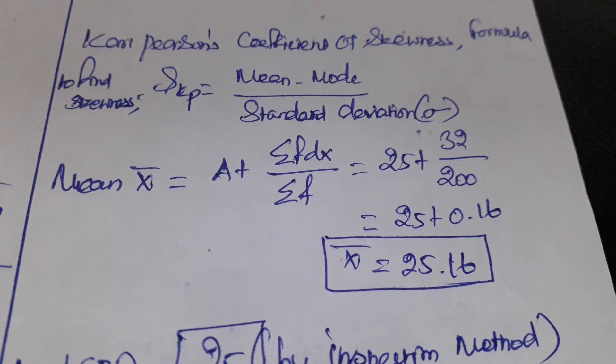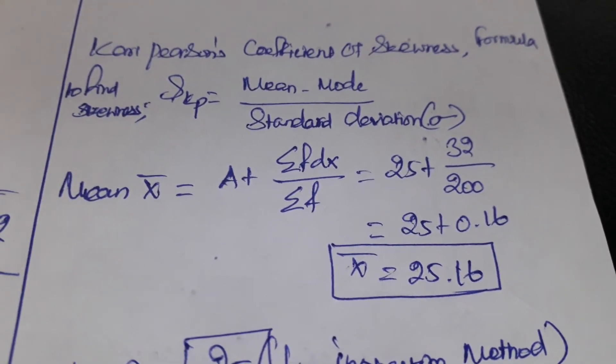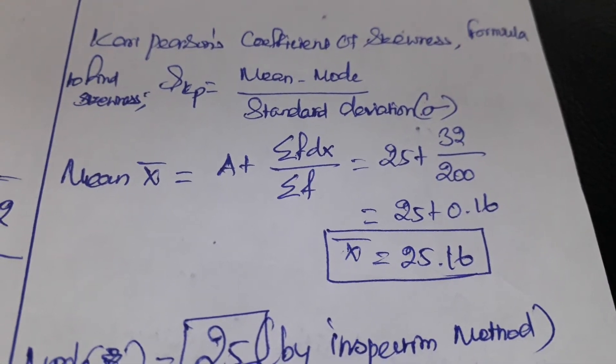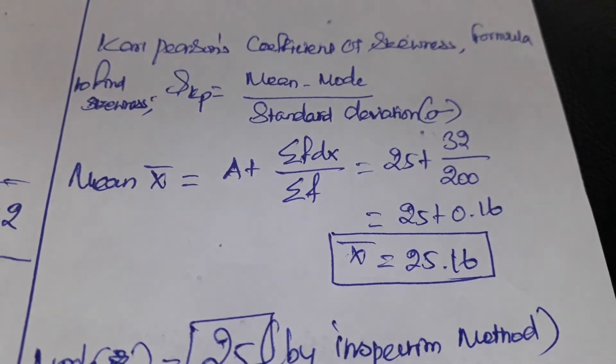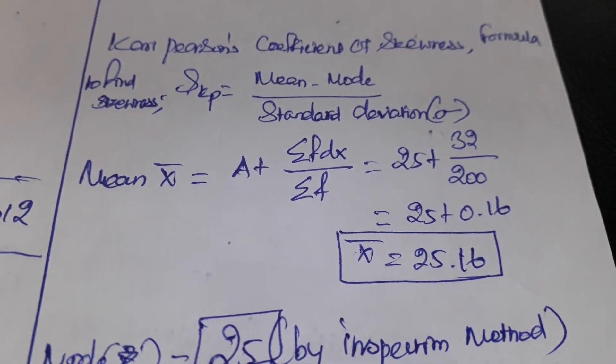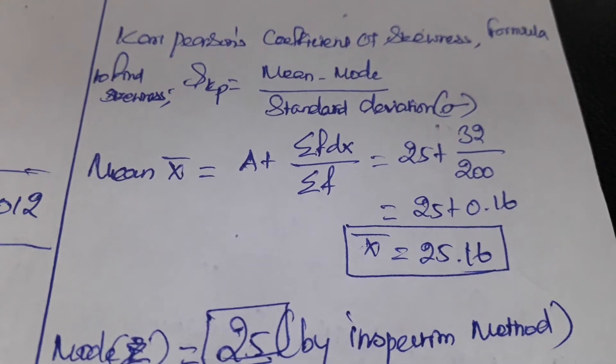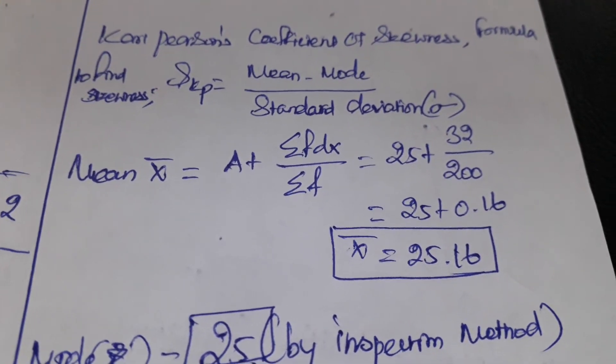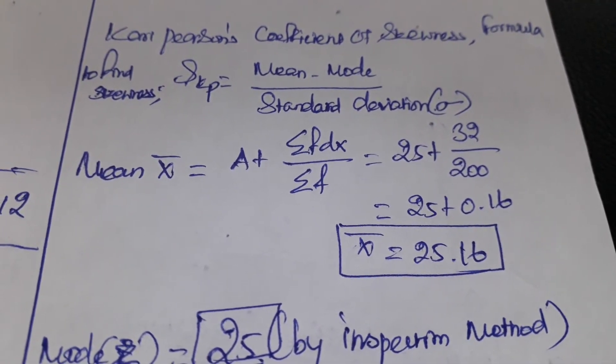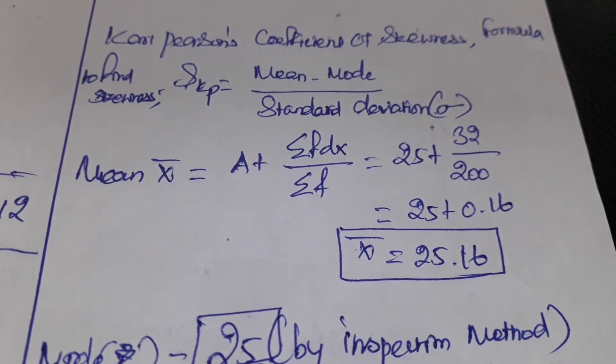It's called sigma also. Mean, we usually call it x̄. Mode we can call it z. So mean formula is A plus sigma f of dx by the sigma frequency. Here A is the assumed value.